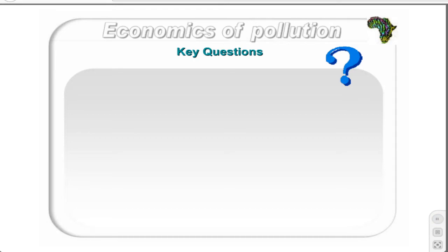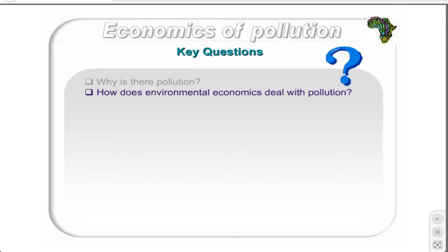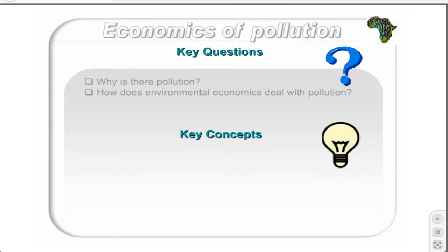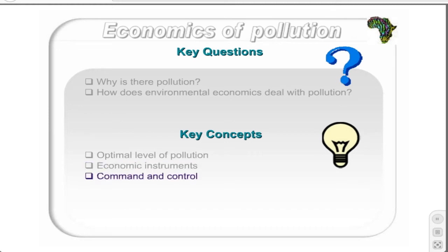The third chapter discusses the economics of pollution and pollution management. The concept of pollution is an externality and thus is a market failure. The key questions that will be addressed are: Why is there pollution? How does environmental economics deal with pollution? The key concepts discussed are: the optimal level of pollution, economic instruments, command and control, and pollution taxes and emission charges.